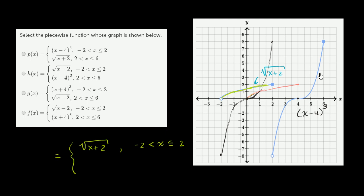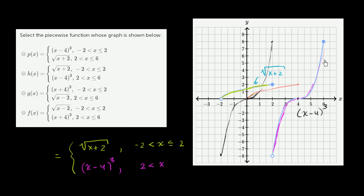So over this interval, it is x minus 4 to the third power. This part of the function is x minus 4 to the third power for x being greater than 2 — so 2 is less than x — and it's defined all the way to x being equal to 6, but not beyond. So x is less than or equal to 6.